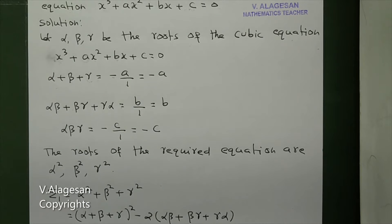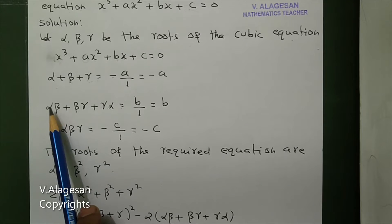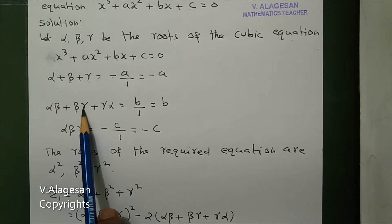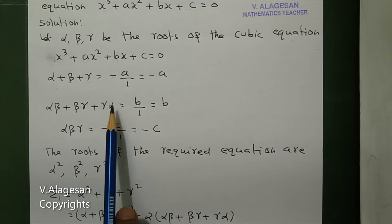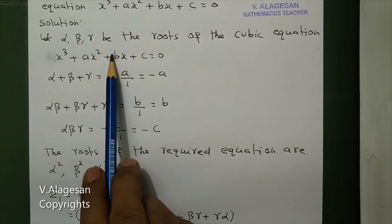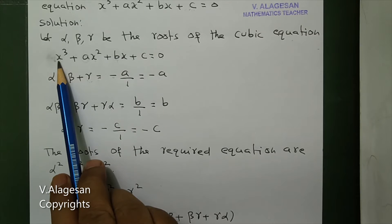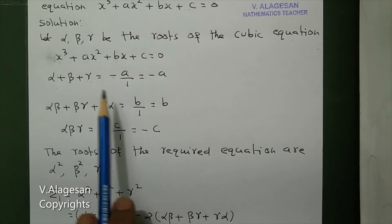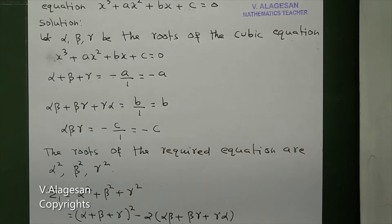Next, the sum of the product of the two roots: alpha·beta + beta·gamma + gamma·alpha = coefficient of x divided by coefficient of x³, which is b by 1, equal to b.